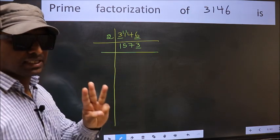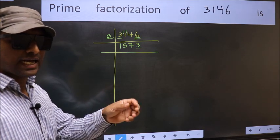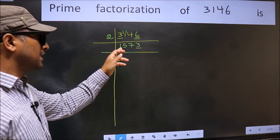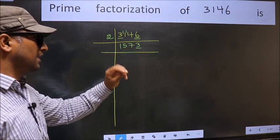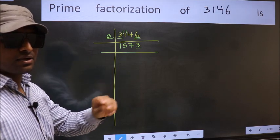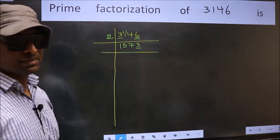Next prime number, 3. To check divisibility by 3, for that we should add the digits. What I mean is, 1 plus 5 plus 7 plus 3. We get 16. And 16 is not divisible by 3. So this number is also not divisible by 3.